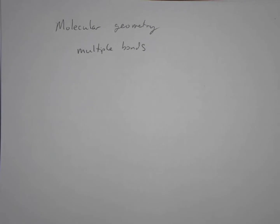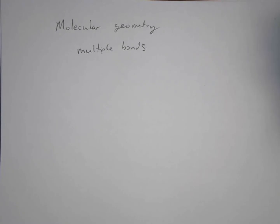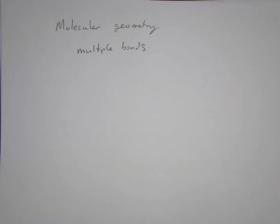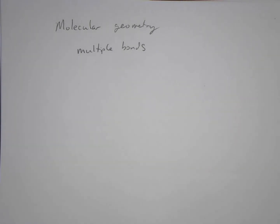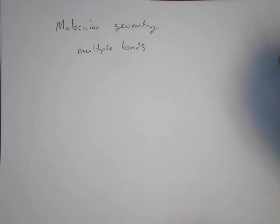This is a final lecture video on molecular geometry, and we're going to look at three different topics. The first one is: what do you do about multiple bonds when determining the molecular geometry of molecules that have multiple bonds in them?